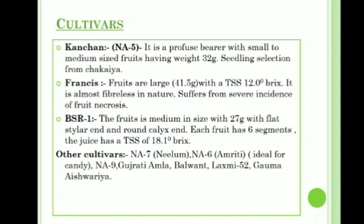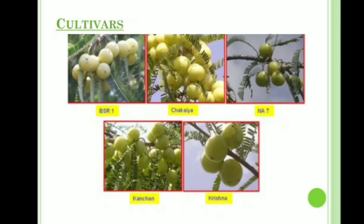Other cultivars include NA7 (also known as Neelam), NA6 (also known as Amriti, ideal for Amla candy making), NA6 Gujarati Amla, Balwant, Lakshmi 52, Goma Aishwarya. These are the pictures of the cultivars: BSR1, Chakaya, NA7, Kanchan, and Krishna.